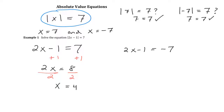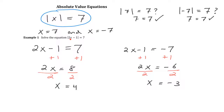For the second equation, 2X minus 1 equals negative 7, I add 1 to both sides to get 2X equals negative 6, then divide by 2 to get X equals negative 3. Checking: negative 3 doubled is negative 6, minus 1 more is negative 7, and the absolute value of negative 7 is positive 7. So X equals 4 and X equals negative 3 are both solutions, and there are no others.